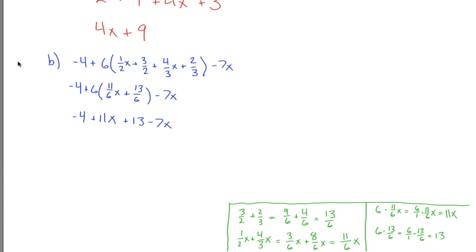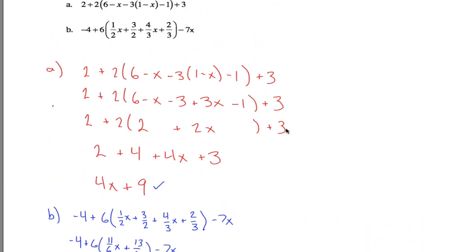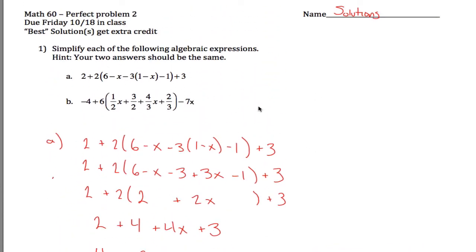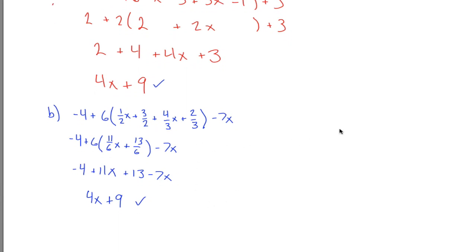And now I'm really close to done. Now all I have to do is combine like terms. 11 x minus 7 x is 4 x. Negative 4 plus 13 is 9. So what I'm left with is 4 x plus 9. Same thing I got up here. That's good because I think I had a hint. Two answers should be the same. So good, I got the same answers. So I guess we can call that good. That's the end of this problem.